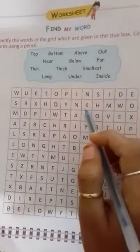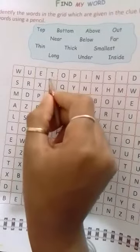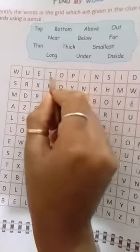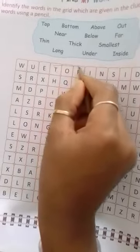As in, the first spelling is top. T-O-P, top. Now, here you have to find the spelling of top and circle it. As you can see, here it's T-O-P, top. Now look here, identify, is there top? Now top, you should be able to see it here. T-O-P, top. T-O-P, top. First one is found.